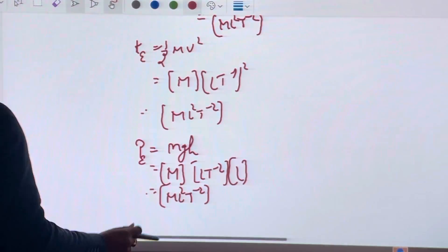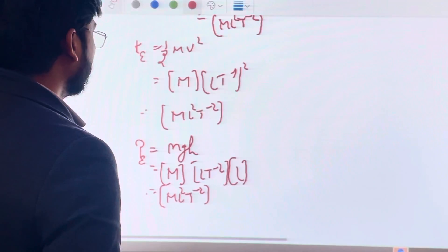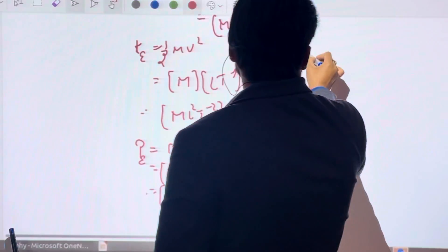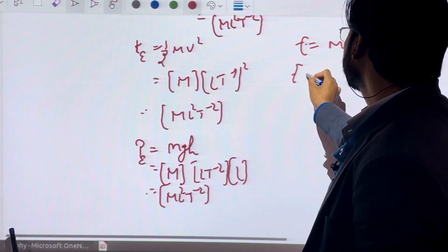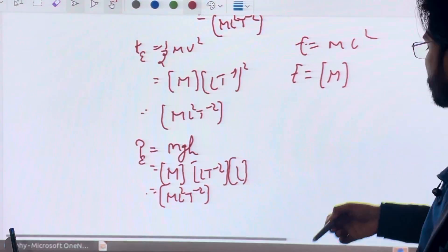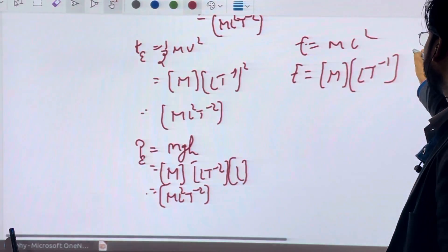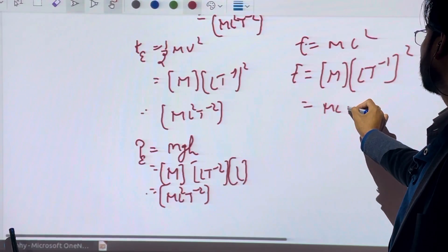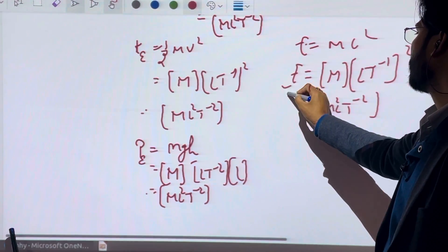All forms of energy have the same dimensions. Einstein equation is E equals mc squared. E equals M for M and c is the speed of light, LT minus 1. So dimension is ML²T minus 2, dimension of energy.